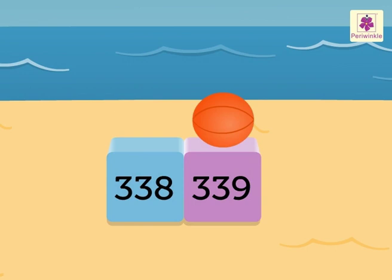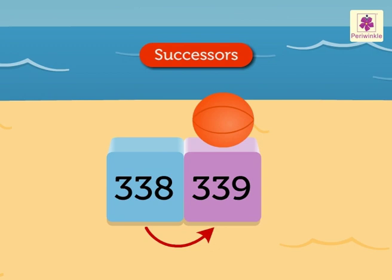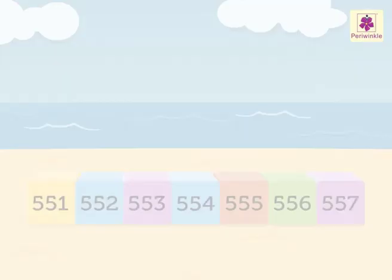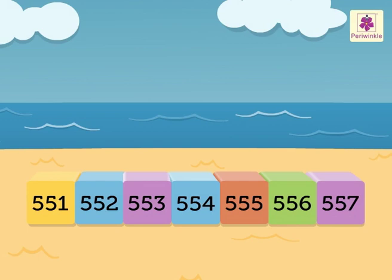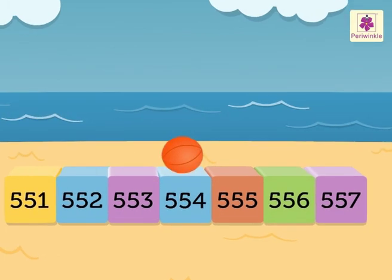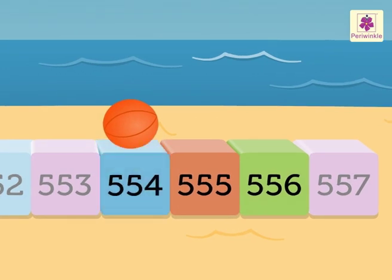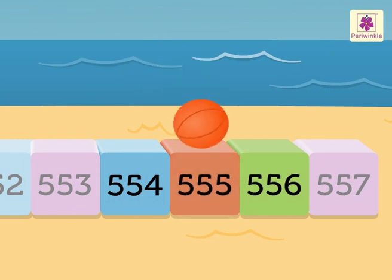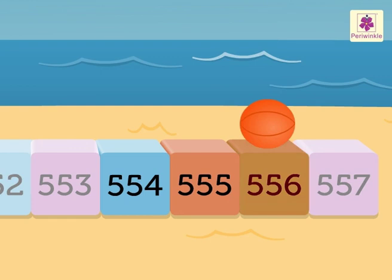Numbers that come after a given number are also called successors. Here, the number 339 is a successor. Let us try one more example. Which two numbers come after the number 554? Yes — 555 and 556.